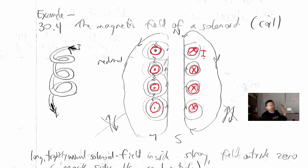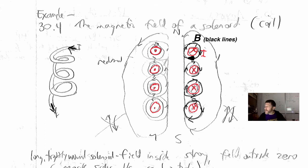You can use your right-hand rule — the magnetic field will curl around in this direction for each loop. The magnetic field due to each of these loops is in the opposite direction on the outside, and again, you can use your right-hand rule to determine that.